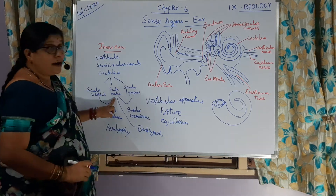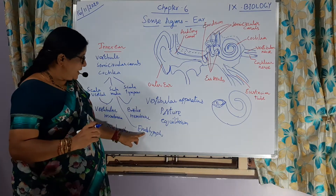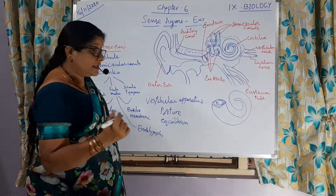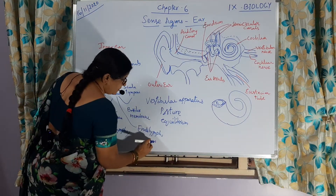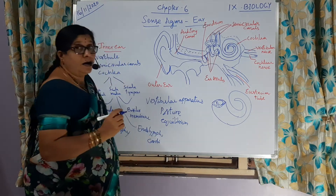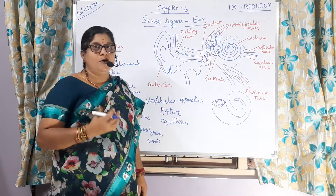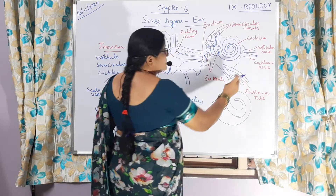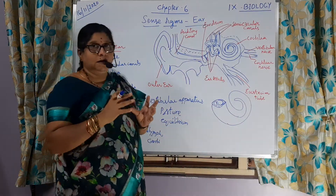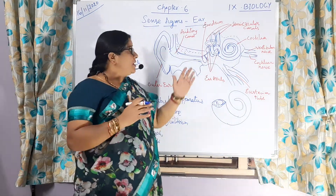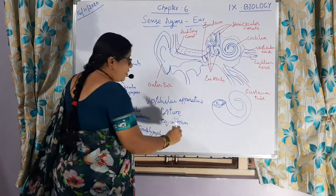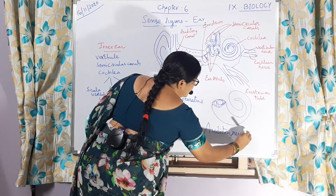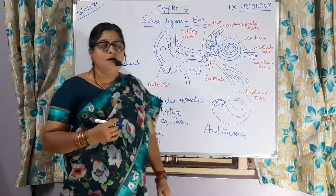The scala media contains, on the membrane of its endolymph, the real primary sensory cells of hearing called the organ of Corti, which help in receiving information about sound. The cochlear nerve and vestibular nerve fibers connect together to form the auditory nerve, which is given off from the ear to the brain and helps in passing sensory information.